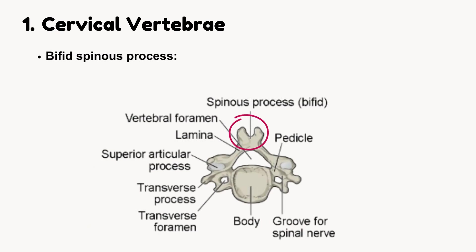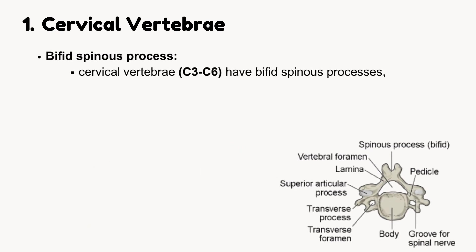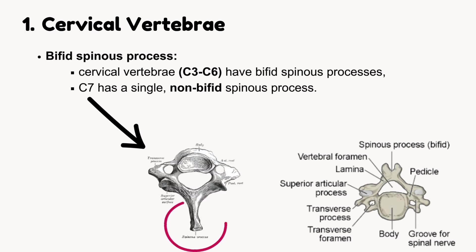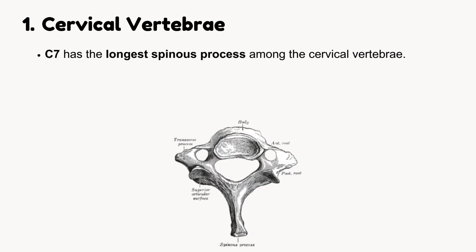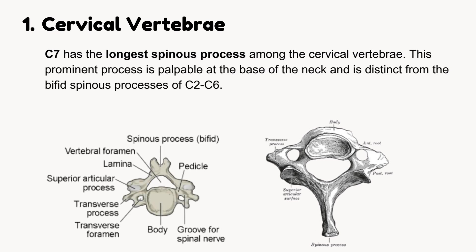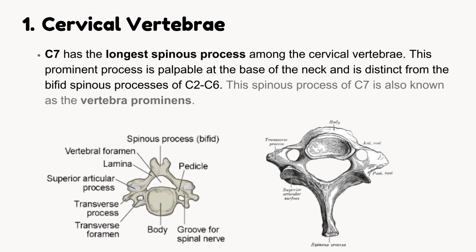Bifid spinous process. Cervical vertebrae C3 to C6 have bifid spinous processes, while C7 has a single, non-bifid spinous process. Vertebra prominens: C7 has the longest spinous process among the cervical vertebrae. This prominent process is palpable at the base of the neck and is distinct from the bifid spinous processes of C2 to C6. The spinous process of C7 is also known as the vertebra prominens.